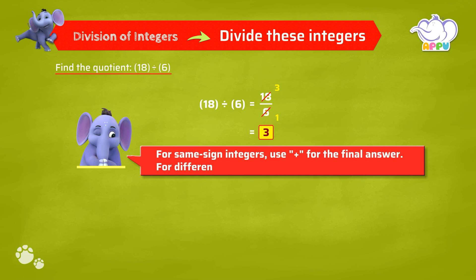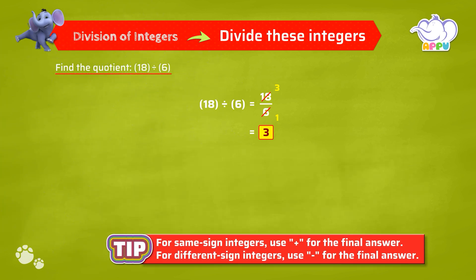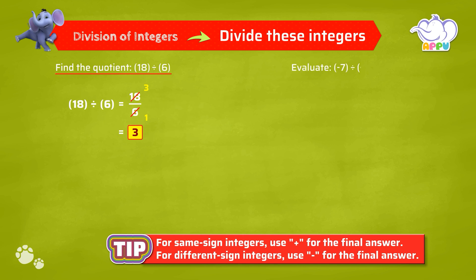For different sign integers, use minus for the final answer. Evaluate minus 7 divided by minus 28.